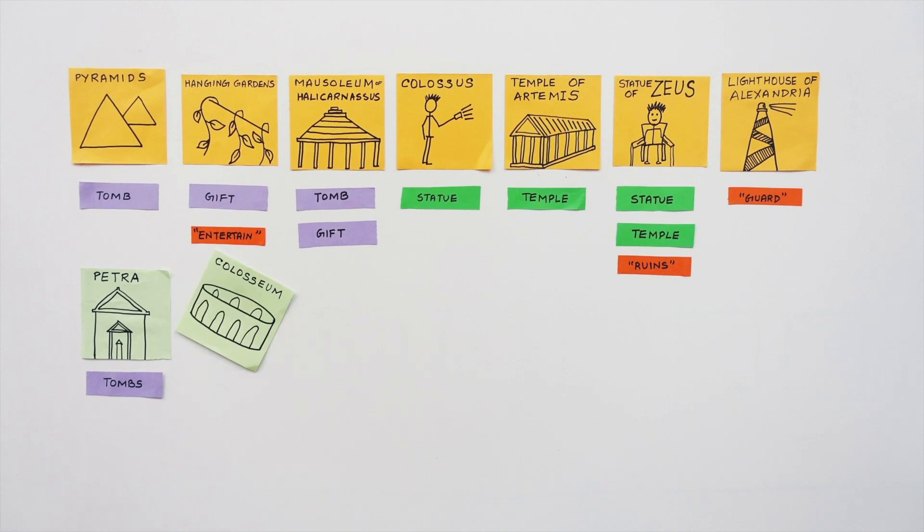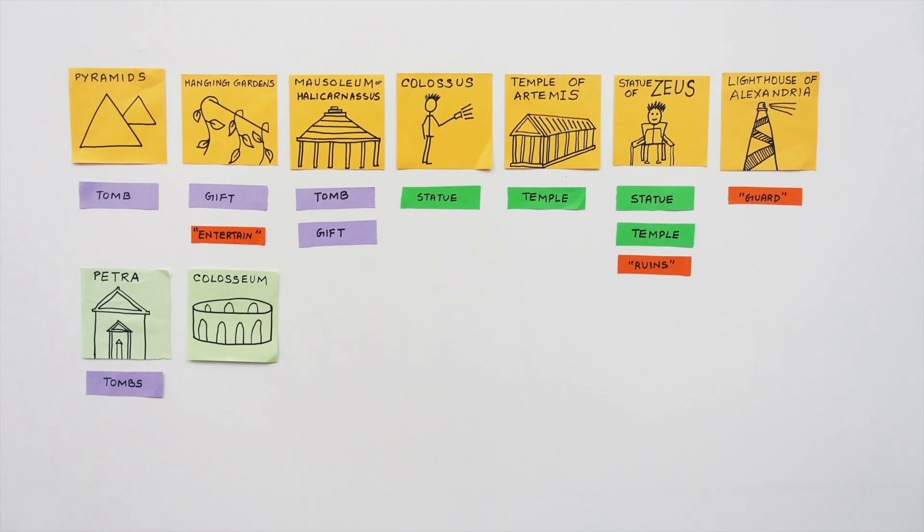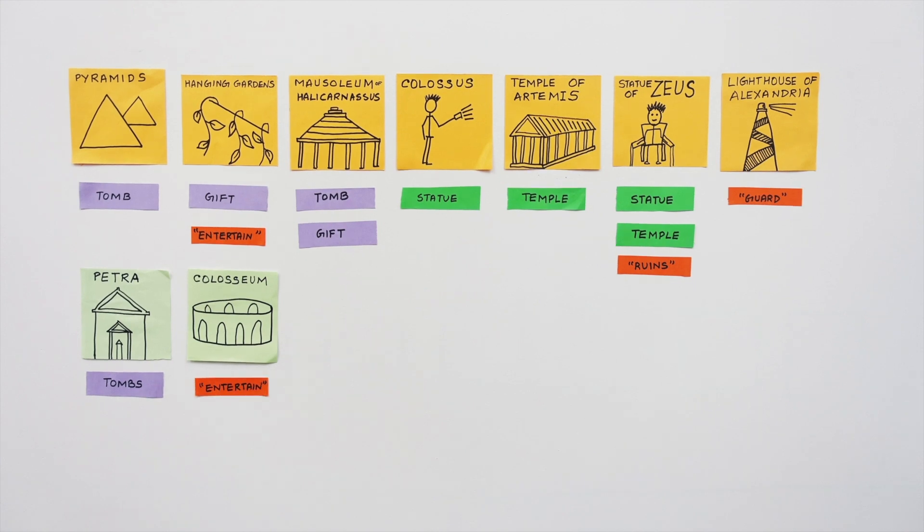The Colosseum of Rome, sounding similar to the Colossus of Rhodes, was an amphitheater built by Titus that served to entertain the Romans.